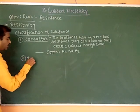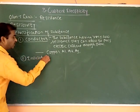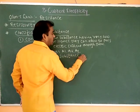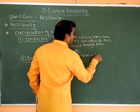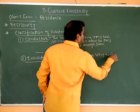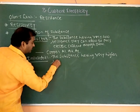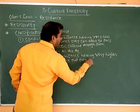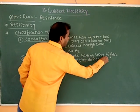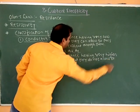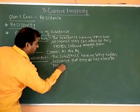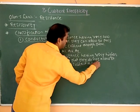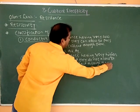The second category is insulators. Insulators are substances that have very high resistance and therefore do not allow electric current to pass through them. They are called insulators.